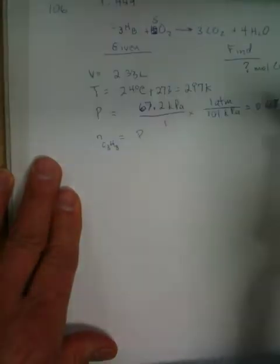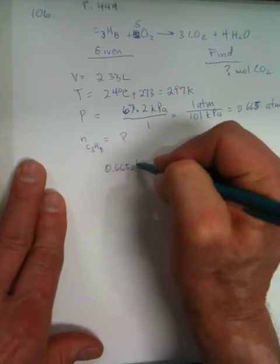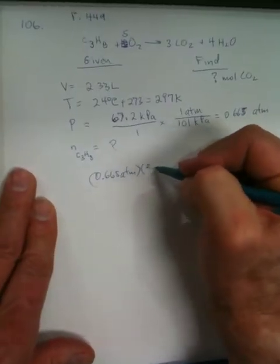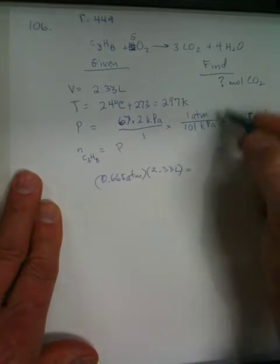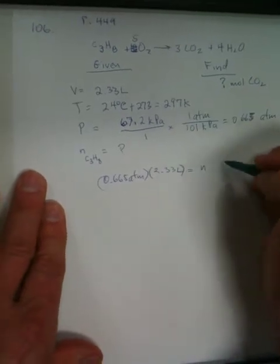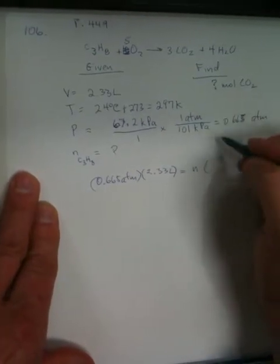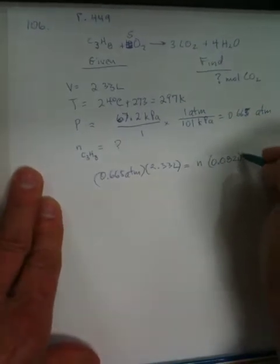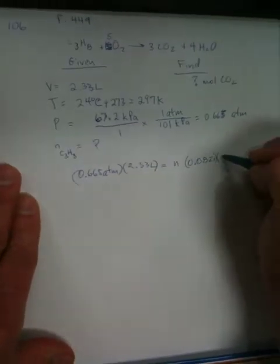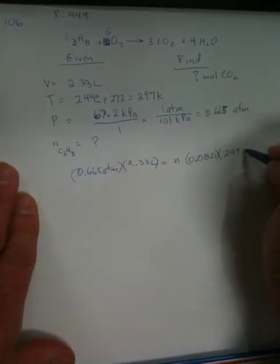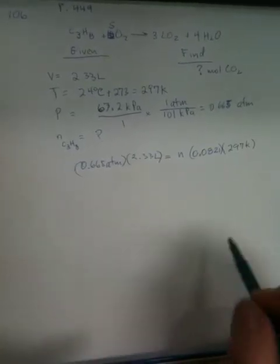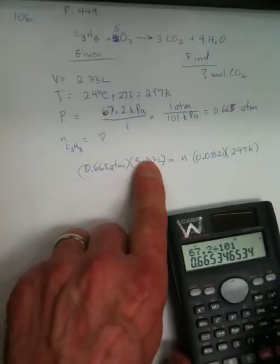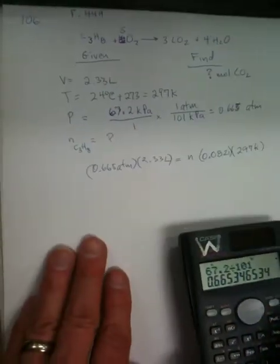So we've got pressure at 0.665 atmospheres. We've got volume at 2.33 liters. We go to moles, which we don't know. We have the constant, 0.0821, and then we need the temperature at 297, and that's in Kelvin. And now all we have to do is solve for N, and we do that by dividing these two guys by these two. Does everybody understand why?